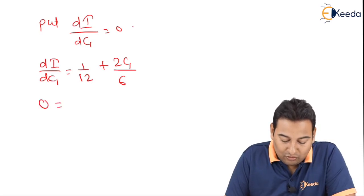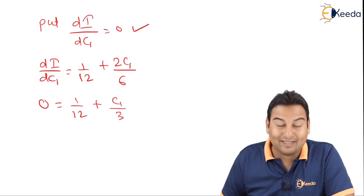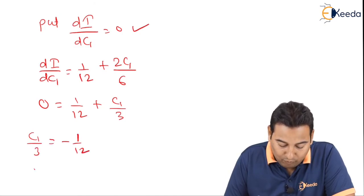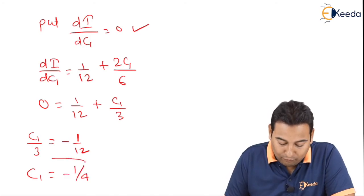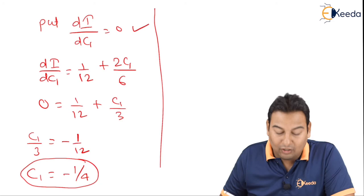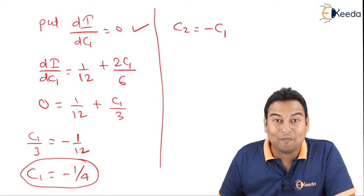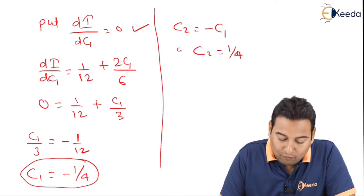Setting dI/dc1 = 0: 1/12 + c1/3 = 0, which gives c1/3 = −1/12, so c1 = −1/4. Since c2 = −c1, we get c2 = 1/4.